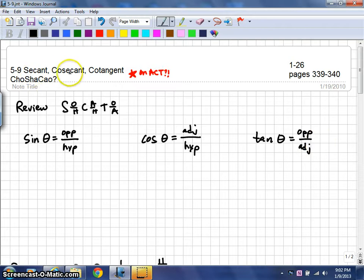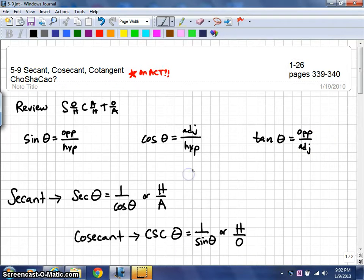When you work with secant, cosecant, and cotangent, you're going to take those same ratios and you're going to use them as reciprocals.